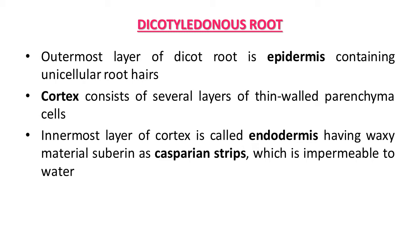The next tissue layer is cortex, which is made up of parenchymatous cells. After cortex, the innermost layer is endodermis. The endodermis layer has a single layer of barrel-shaped cells without any intercellular spaces. The radial walls of endodermal cells have a deposition of suberin material, known as the Casparian strip. The main feature of the Casparian strip is that it is impermeable to water, so water and dissolved minerals are forcibly pushed through to the next layer.